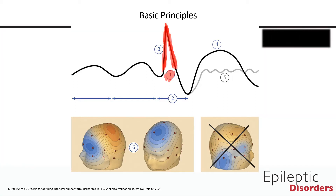The first criterion we will discuss is the morphology of the waveform in question. In order to be characterized as an epileptiform discharge, the waveform must have a di- or triphasic morphology with a sharp, spiky component, i.e., a pointed peak. In this diagram, the part of the waveform highlighted in red shows a diphasic wave with a sharp, spiky component, i.e., a pointed peak, which is consistent with the first criterion.